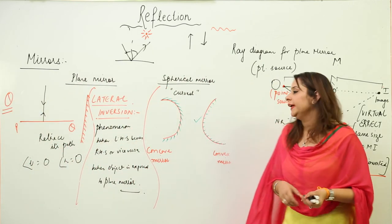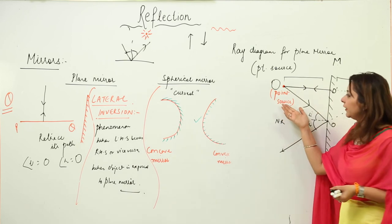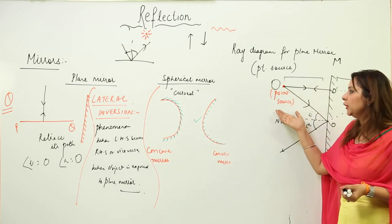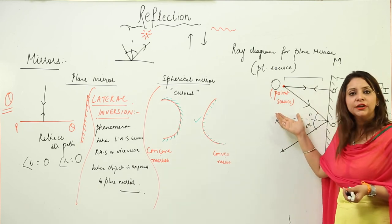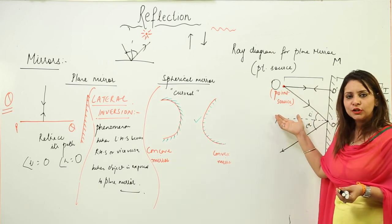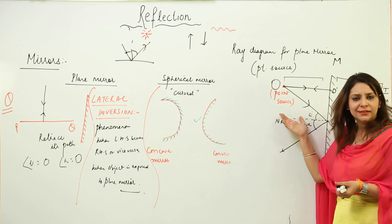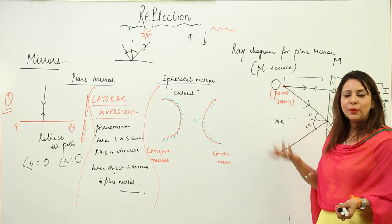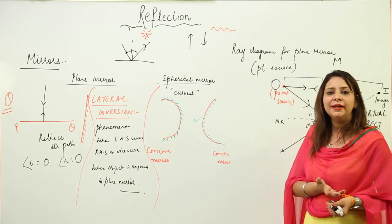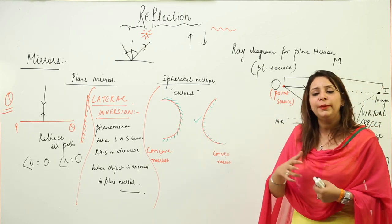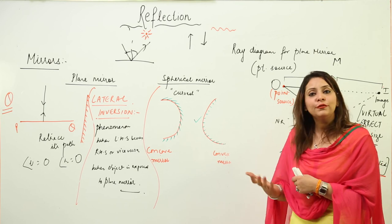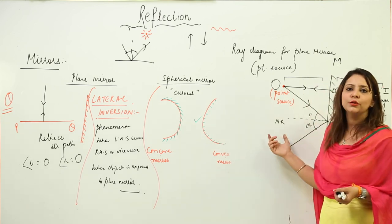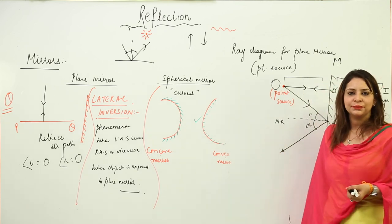Now we'll draw a figure for a finite source as well. Although it may not be included in the syllabus, it's useful to understand what kind of image is formed for a finite object, so let's discuss that now.